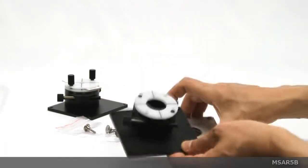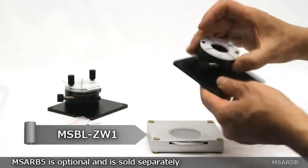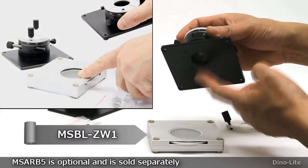Using the included screws, the MS-AR5B simply connects to the top of the polarizing backlight with the viewing hole above the light source.